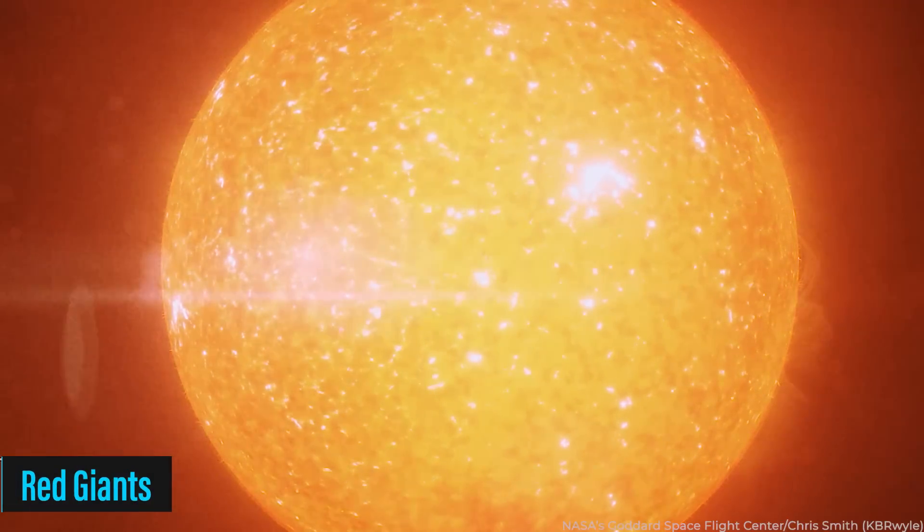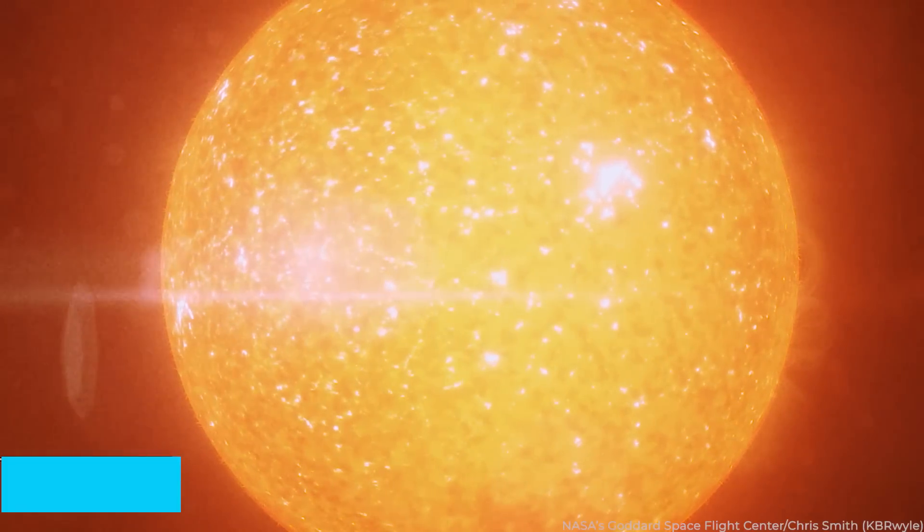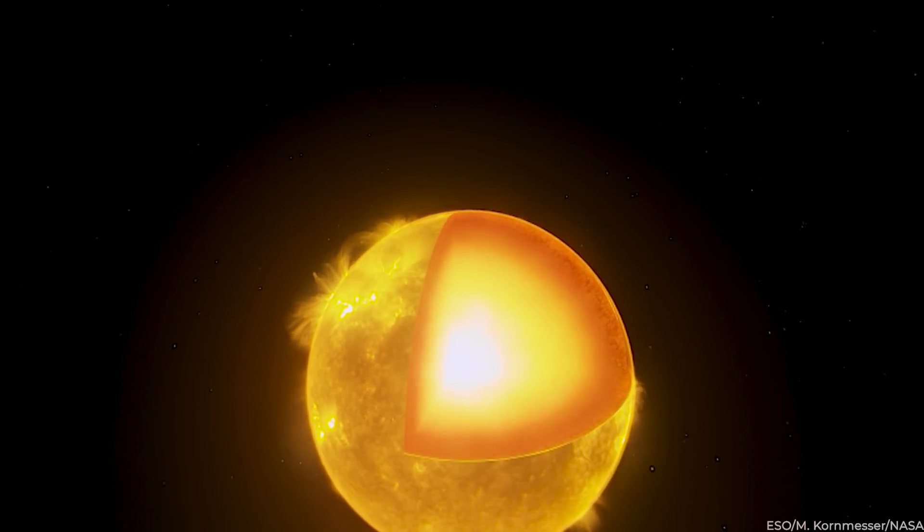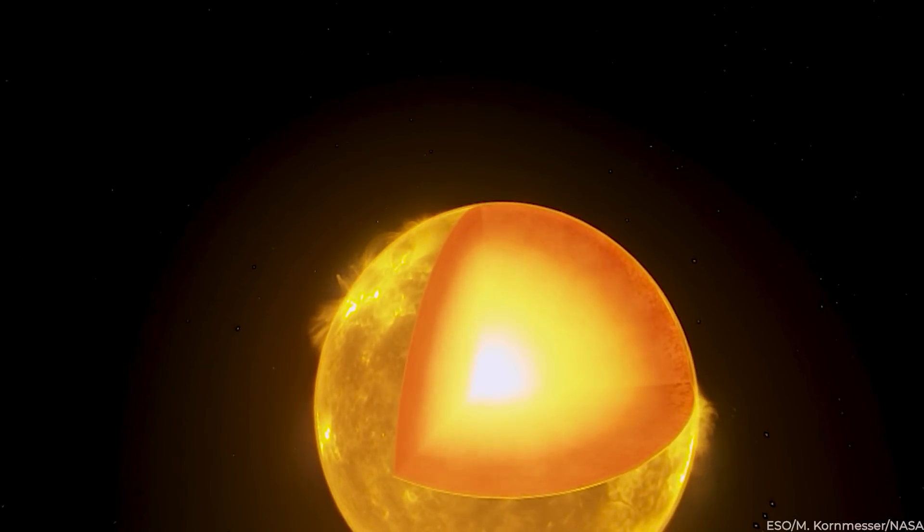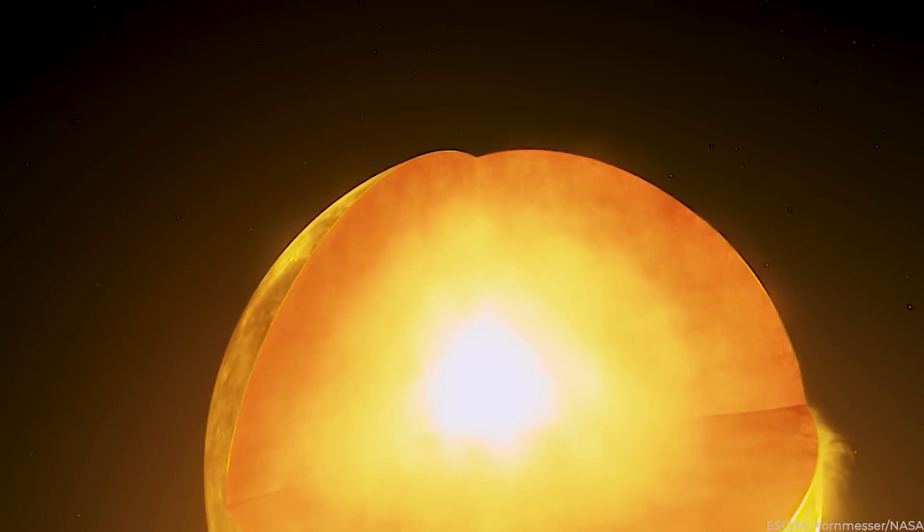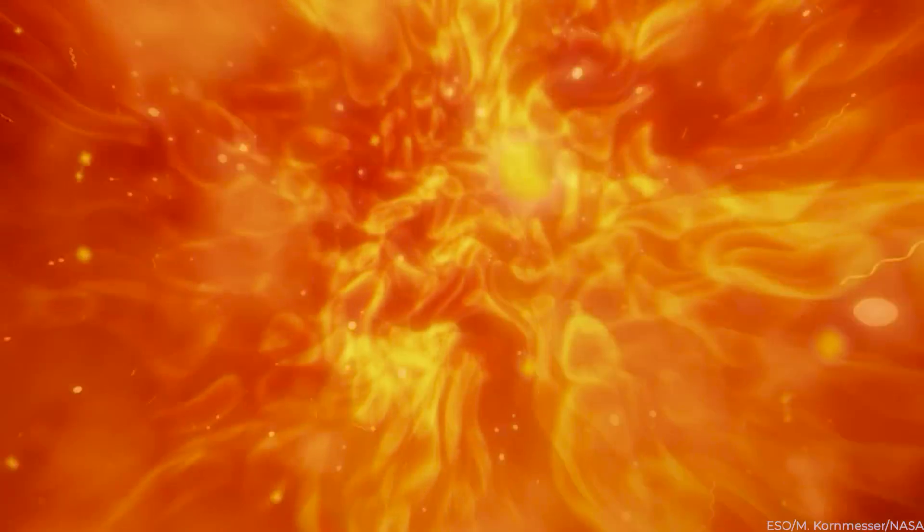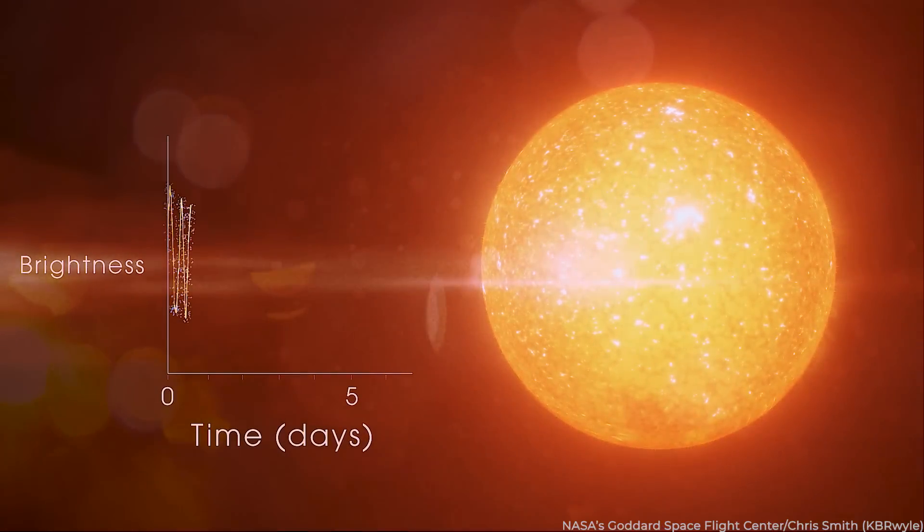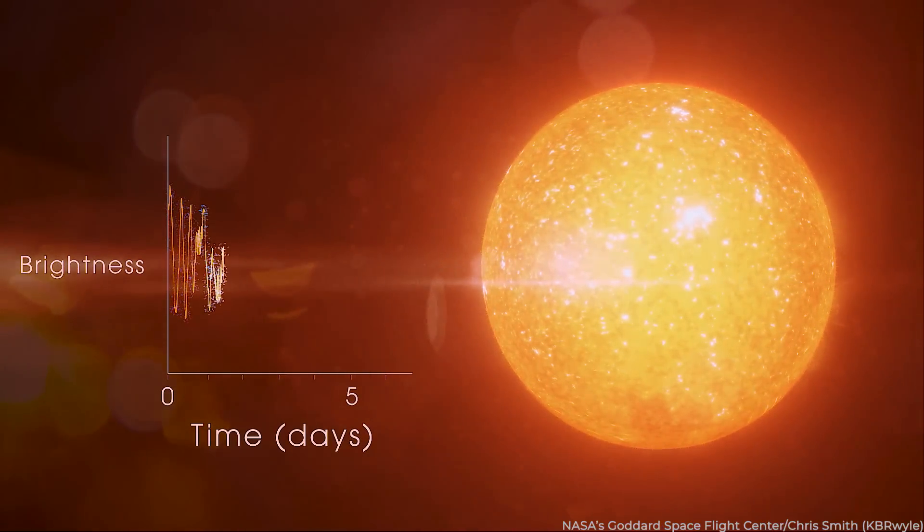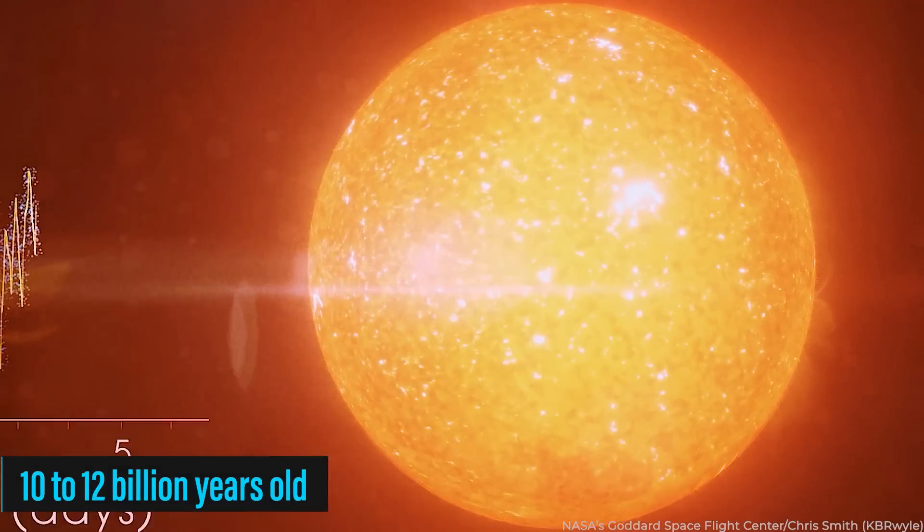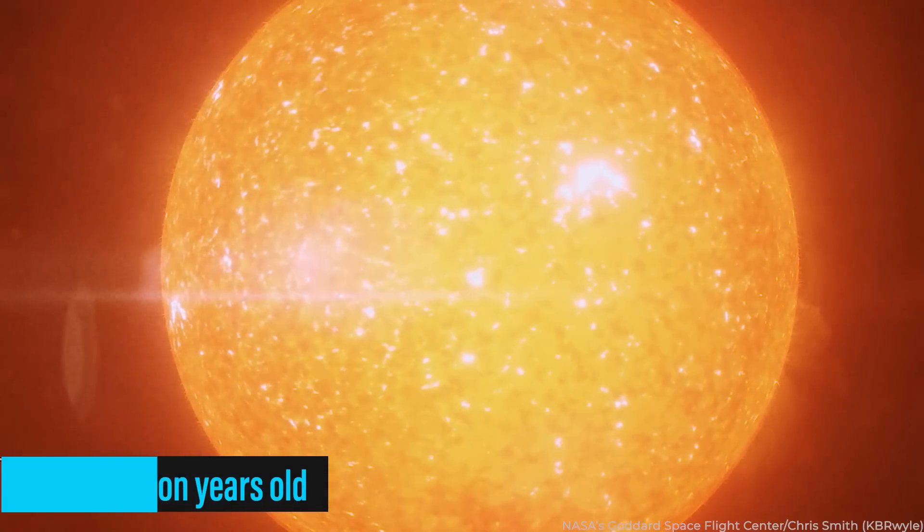Another fascinating age marker is red giants. They're what low-to-medium-mass stars become when they run out of hydrogen in their core. These stars expand and cool, transforming into these giant reddish stars. They have a helium-burning core, surrounded by a shell where hydrogen continues to burn, producing a lot of energy and making them very bright. By observing their brightness and color, scientists can estimate their mass and thus their age. The oldest red giants are expected to be about 10 to 12 billion years old.